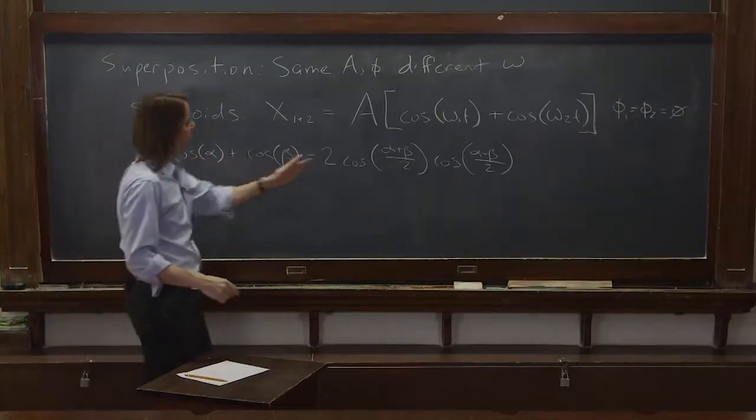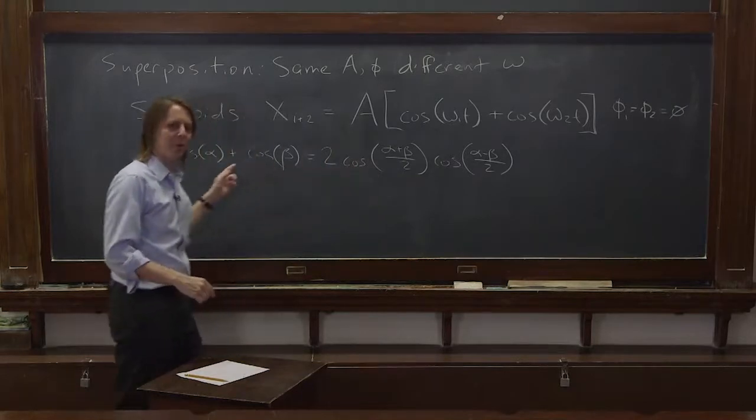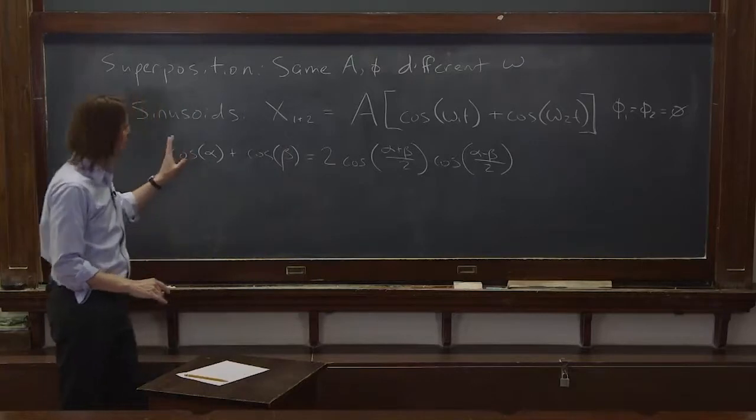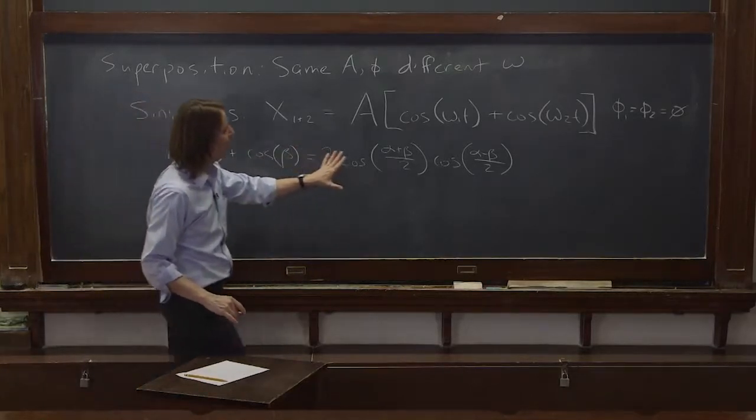So in this case, it's the sum to product rule. You can also use it to go backwards. You can do, there's versions with signs, there's general versions, everything. Let's just start with this one. So the cosine of one number plus the cosine of another number will follow this rule.